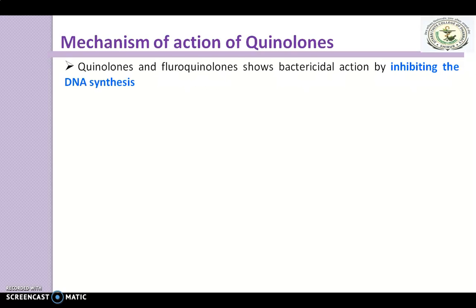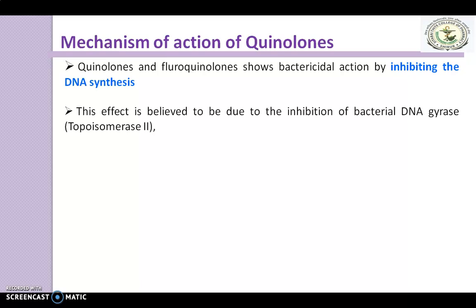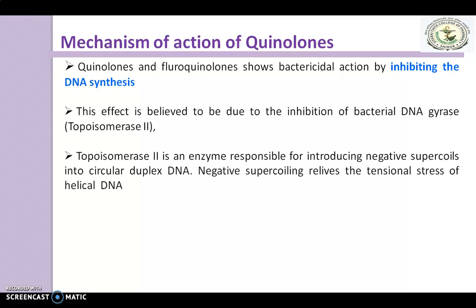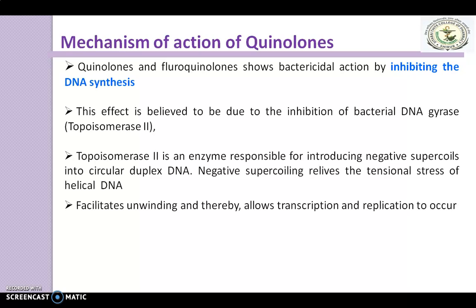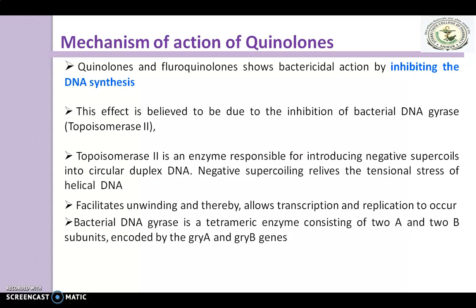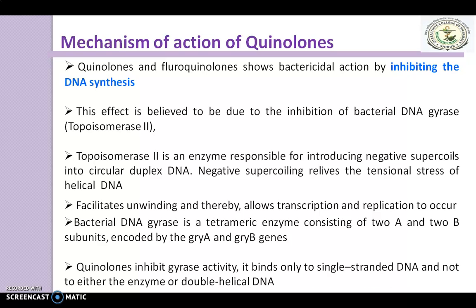Quinolones and fluoroquinolones show bactericidal action by inhibiting DNA synthesis. This effect is believed to be due to the inhibition of bacterial DNA gyrase, also known as topoisomerase 2. This topoisomerase 2 is an enzyme responsible for introducing negative supercoils into circular duplex DNA. Bacterial DNA gyrase is a tetrameric enzyme consisting of 2A and 2B subunits encoded by the GYRA and GYRB genes. Quinolones inhibit gyrase activity.